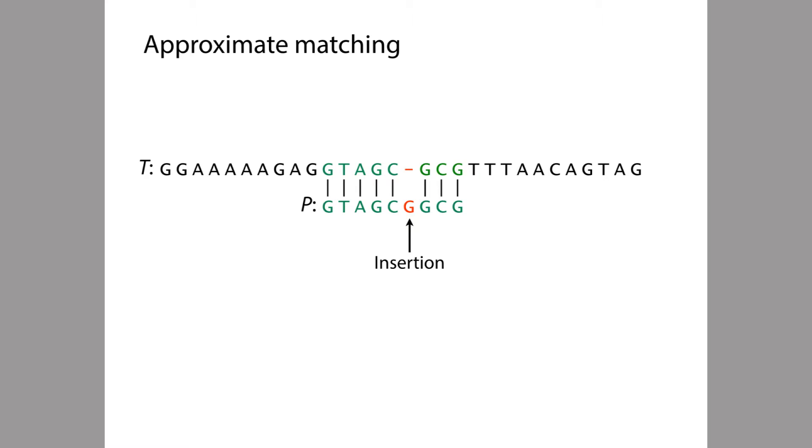Here is another kind of difference. This time the difference is that there's an extra character in P relative to T. The dash that you can see at the top in red is called a gap. And so this G that's highlighted in red is an insertion in the pattern P with respect to the text T. Equivalently, we could think of this as a deletion in the text T with respect to the pattern P.